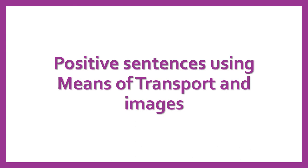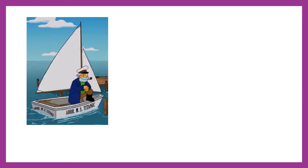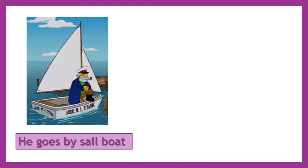Now we're going to use these positive sentences using means of transport and images because it is easier for us to look at it this way. Take a look at this image. As you can see here, we have a man and a sailboat. So we're going to make a sentence. In this case, we're going to use the pronoun he because we're talking about a man. Next, we use the verb goes because we are using the pronoun he. The word 'by' needs to be in any sentence, and finally the means of transport in the image is a sailboat.